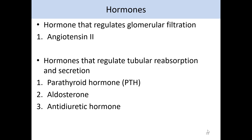We can use angiotensin-2 as a hormone to regulate the process of glomerular filtration. And then we can use other hormones to regulate tubular reabsorption and secretion. Those hormones will be parathyroid hormone, aldosterone, and antidiuretic hormone. But we're first going to start with regulating glomerular filtration using hormones — in this case, angiotensin-2.